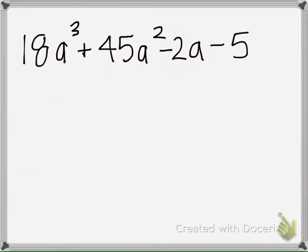Okay, so if we are to factor this problem, the first thing is to look for a GCF. There is no number that can go into 18, 45, 2, and 5, so no GCF.